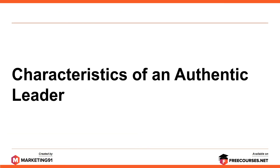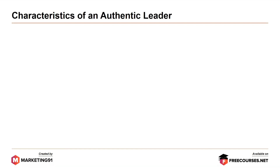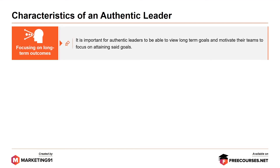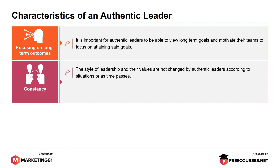Moving on to the characteristics of an authentic leader. First, focusing on long-term outcomes. It is important for authentic leaders to be able to view long-term goals and motivate their teams to focus on attaining said goals. Next, consistency. This style of leadership and their values are not changed by authentic leaders according to situations or as time passes. Their consistency enables their team to rely on them.